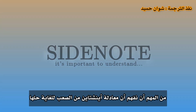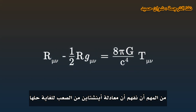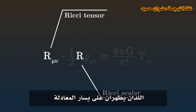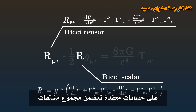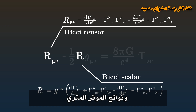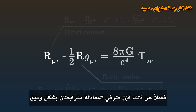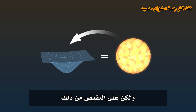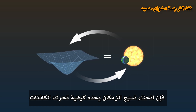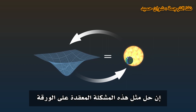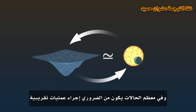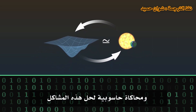It is important to understand that the Einstein equation is extremely hard to solve. As we saw previously, the Ricci tensor and the Ricci scalar, which appear on the left of the equation, contain complex calculations involving derivatives, sums, and products of the metric tensor. Moreover, the two sides of the equation are closely related: the content of the universe tells space-time how to bend, but conversely, the curvature of space-time dictates how objects move. Solving such an intricate problem on paper is almost impossible; in most cases, it is necessary to make approximations and computer simulations.